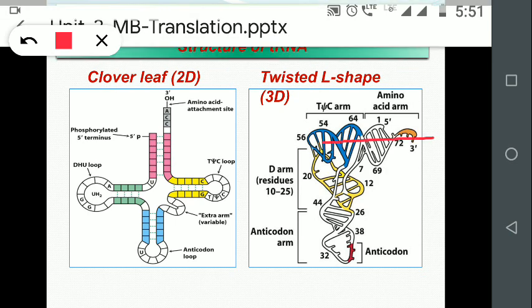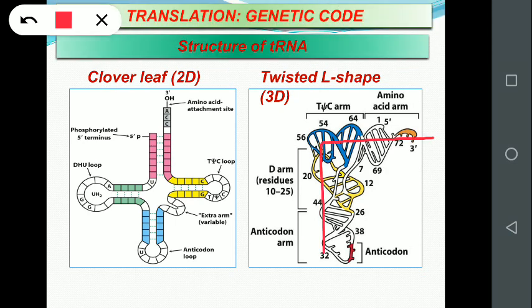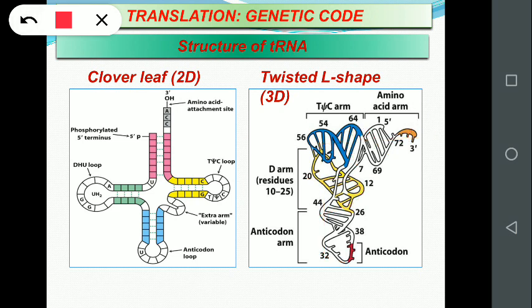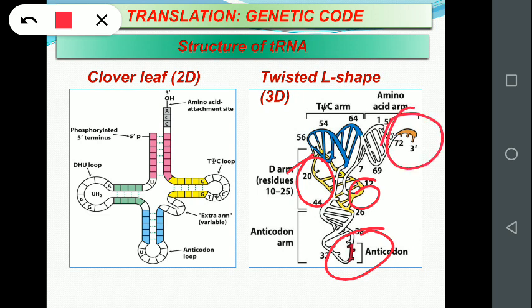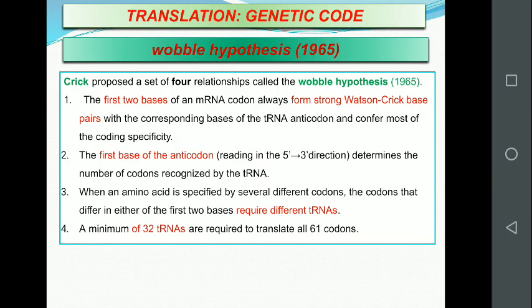In the 3D structure you can observe the twisted-L shape with all these arms visible: the anticodon arm, D arm, extra arm, amino acid accepting arm, and TψC arm. That is about the tRNA structure.